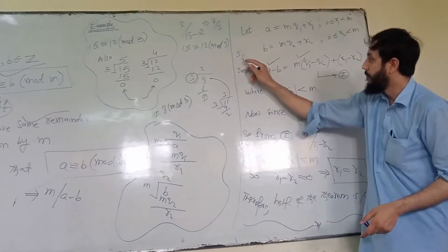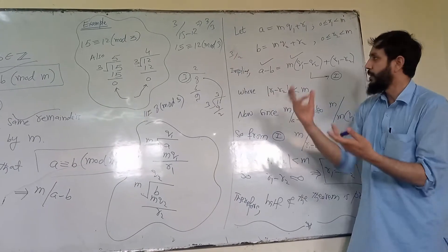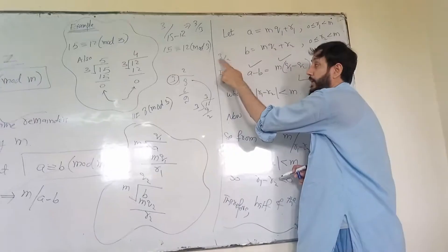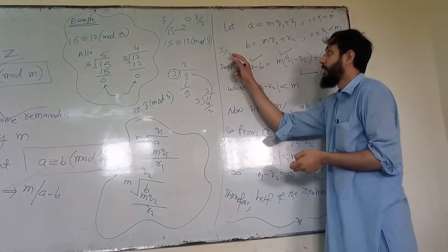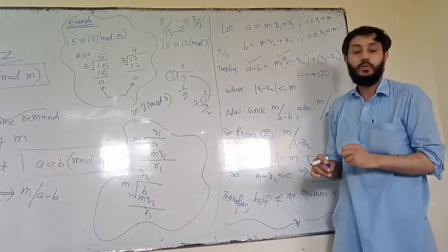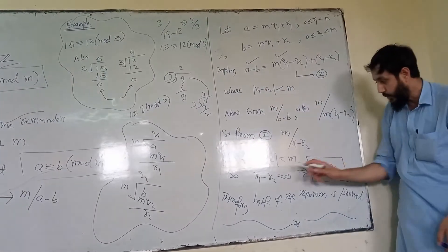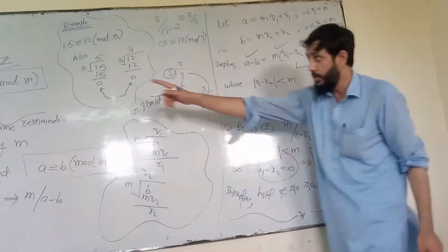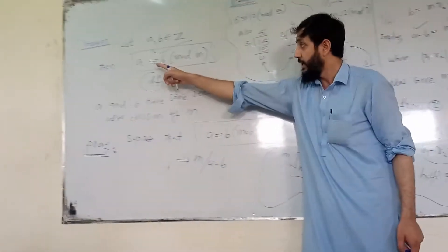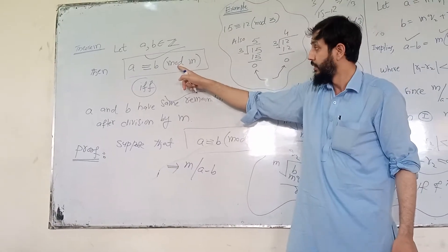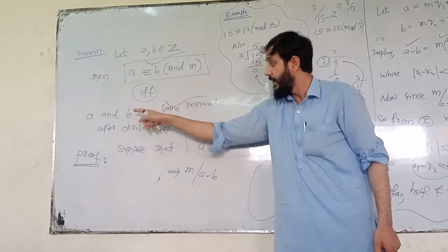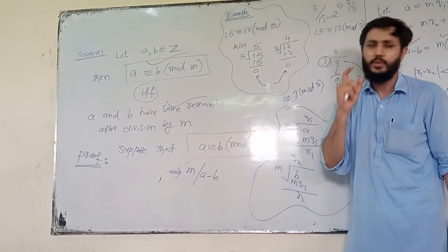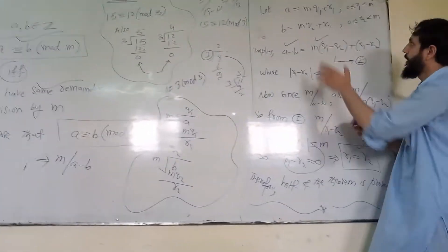For example, 3 does not divide minus 2, and if you take the absolute value, 3 still doesn't divide 2. But if a number is smaller than M and M divides it, the only possibility is that it must be zero. Therefore, R1 minus R2 equals zero, and hence R1 equals R2. So if A is congruent to B modulo M, then A and B have the same remainder after division by M. This is a very easy theorem — in a few steps we have done it.